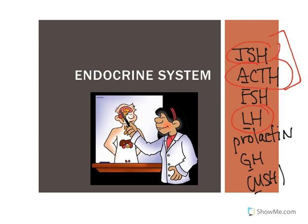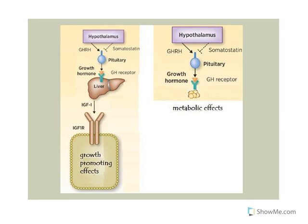So let's talk about growth hormone. Growth hormone is controlled by the secretion of growth hormone releasing hormone, which is produced by the hypothalamus and stimulates the secretion of growth hormone. Somatostatin is the growth hormone inhibiting hormone that inhibits its secretion.